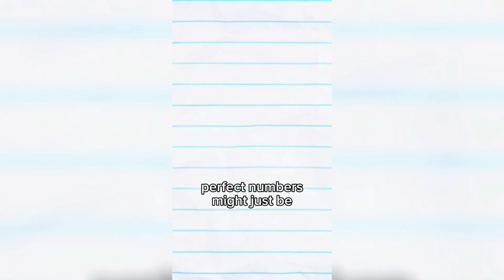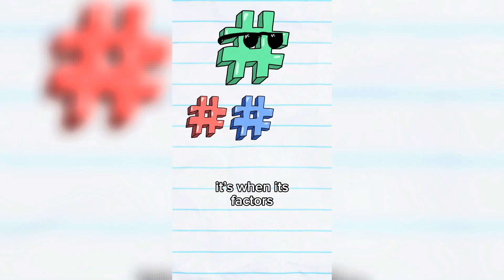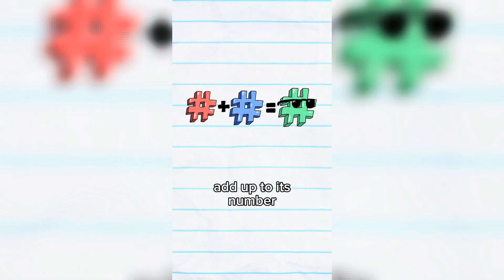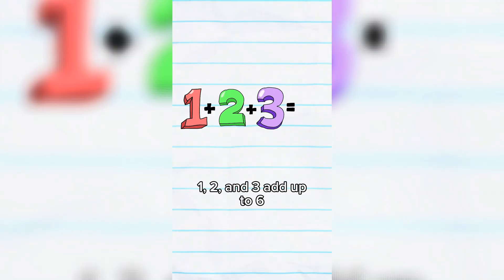Three math facts I bet you didn't know. Perfect numbers might just be the coolest numbers to ever exist. It's when its factors excluding itself add up to its number. For example, 6 is a perfect number because its factors 1, 2, and 3 add up to 6.